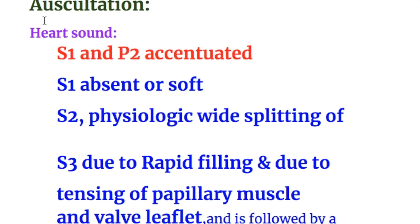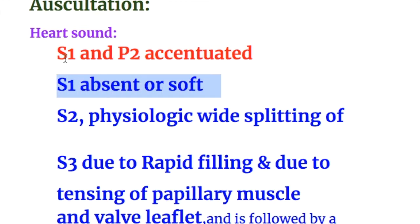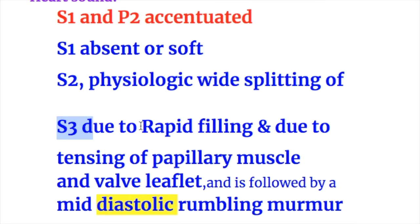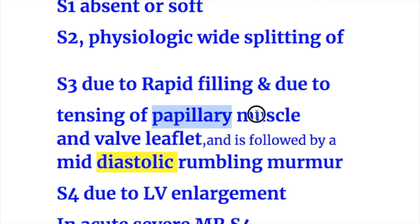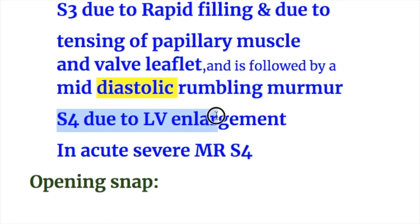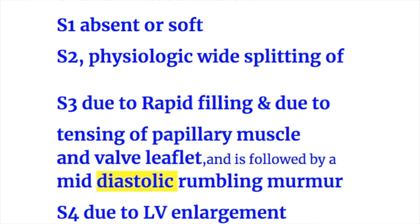Auscultatory differences - heart sounds: In mitral stenosis, the first heart sound and pulmonary sound are accentuated. Whereas in mitral regurgitation, the first heart sound is absent or soft. So S1 is increased in mitral stenosis and decreased in mitral regurgitation. In mitral regurgitation, there is physiologic wide splitting of S2, a third heart sound due to rapid filling and tensing of papillary muscles and valve leaflets, followed by a mid-diastolic rumbling murmur. A fourth heart sound due to LV enlargement is also heard in acute severe mitral regurgitation. So in mitral regurgitation: S1 is absent or decreased, S2 is widely split, and S3 and S4 are present.